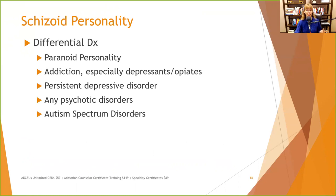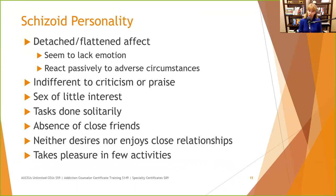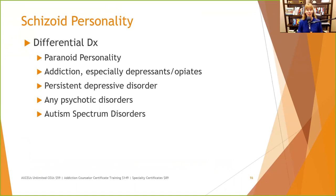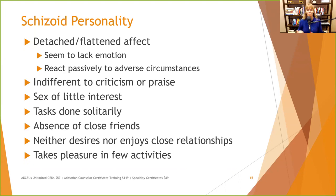Rule out addiction to depressants and opiates, because people who are on depressants and opiates may seem kind of slow and flat and really don't care about criticism or praise. You sometimes see this in heavy marijuana users as well. Also rule out persistent depressive disorder, antipsychotic disorders, and autism spectrum disorders, because people with ASD may have difficulty with interpersonal relationships because they're overstimulating — they don't really desire or enjoy them because it's just too much to process.